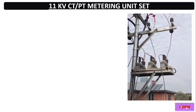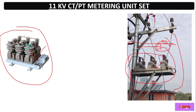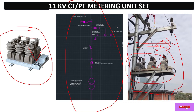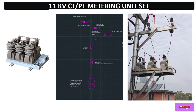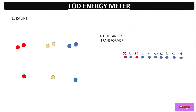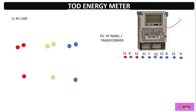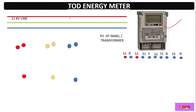Now let's come to the wiring. Here we have a pole-mounted service station where we have a CTPT metering unit. This is a combined CTPT unit mounted on the pole. This is the SLD showing the assembly of the CTPT unit to measure HT side current, voltage, and energy. Let's do the wiring for an 11 kV line. We take the HT meter — also called a TOD energy meter — and here we have an R, Y, B 11 kV line.